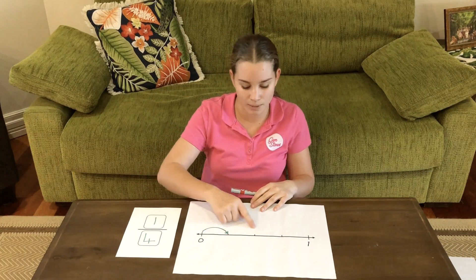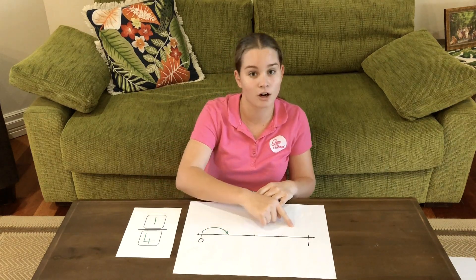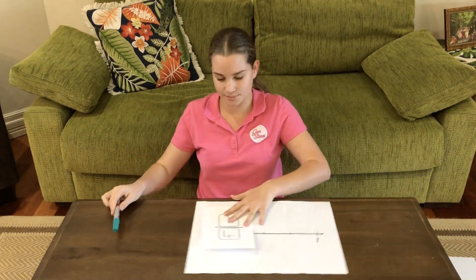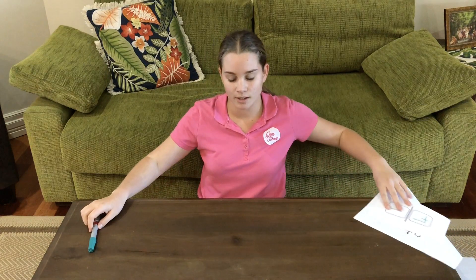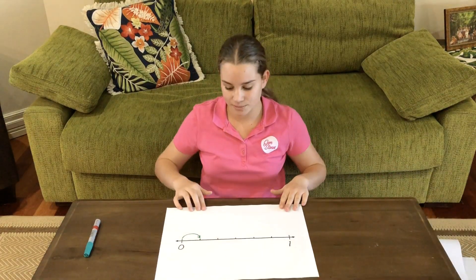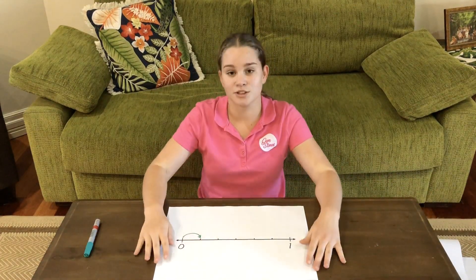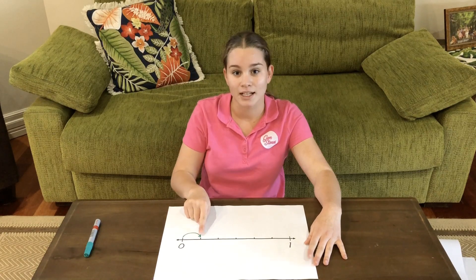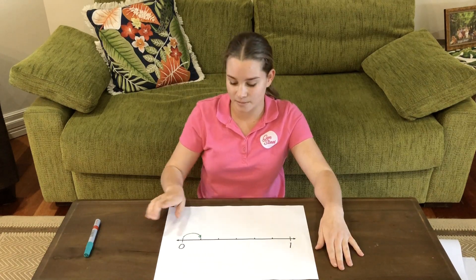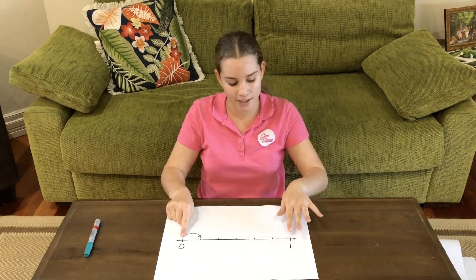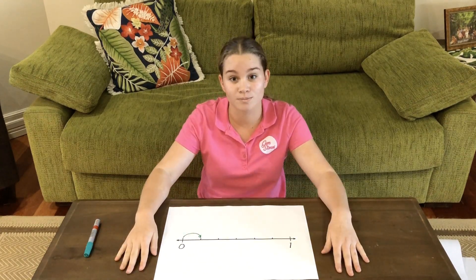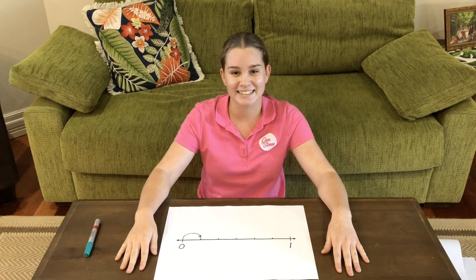The top box tells us how many jumps we've done, and the bottom box tells us how many equal parts there are in the whole. My challenge to you is to write the fraction that matches this point. Don't forget — between zero and one, one is one whole. Thanks!